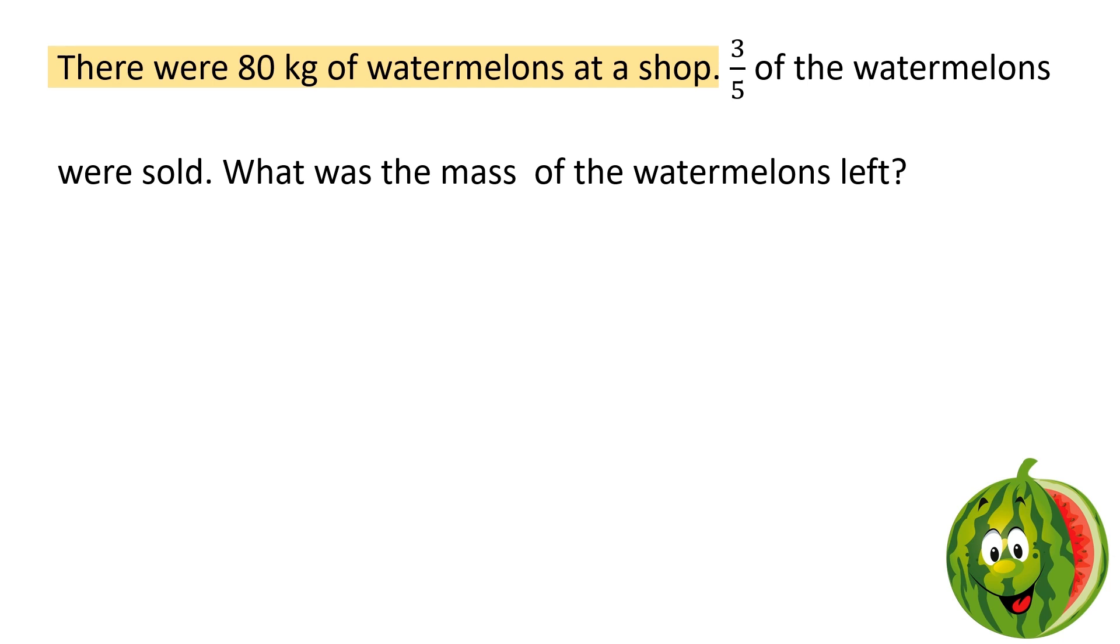There were 80 kg of watermelons at a shop. 3 by 5 of the watermelons were sold. What was the mass of the watermelons left? So, we know that initially there were 80 kg of watermelons and out of this 80 kg, 3 by 5 of watermelons were sold. So, let's find out what is 3 by 5 of 80. 5 ones are 5. What is left? 3. 5 six are 30. 3 times 16 is left in the numerator and the denominator is 1.